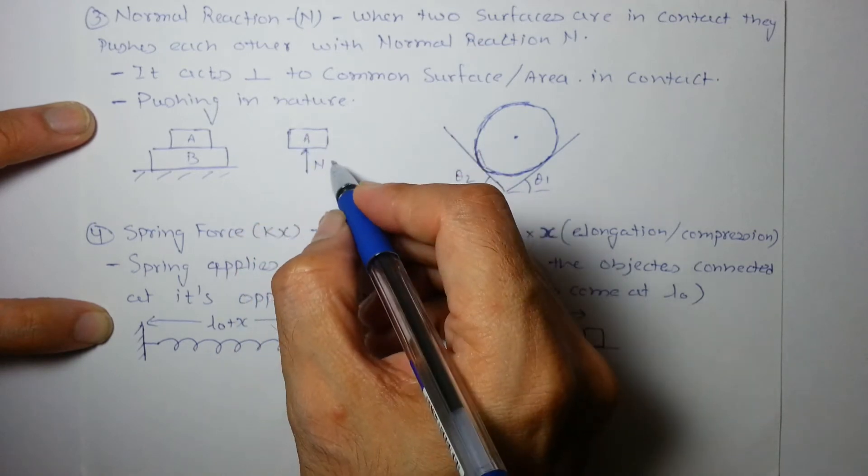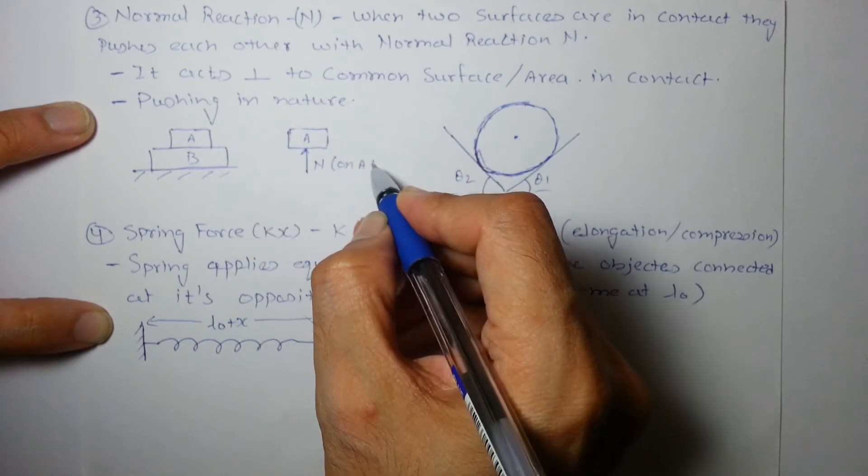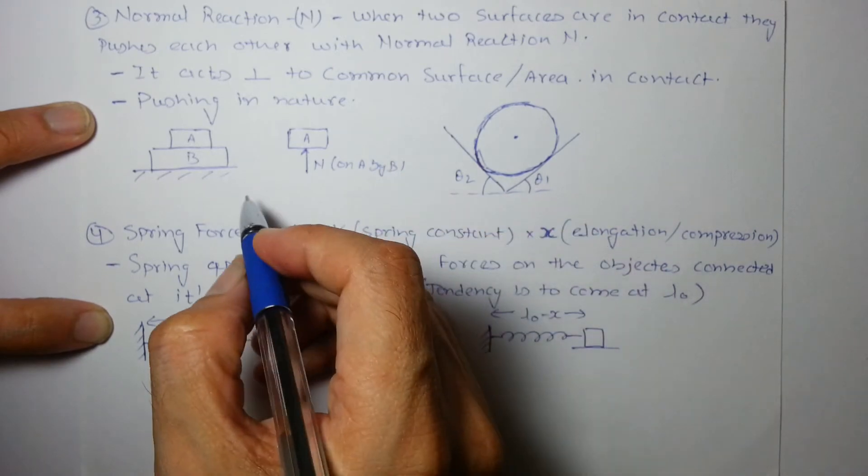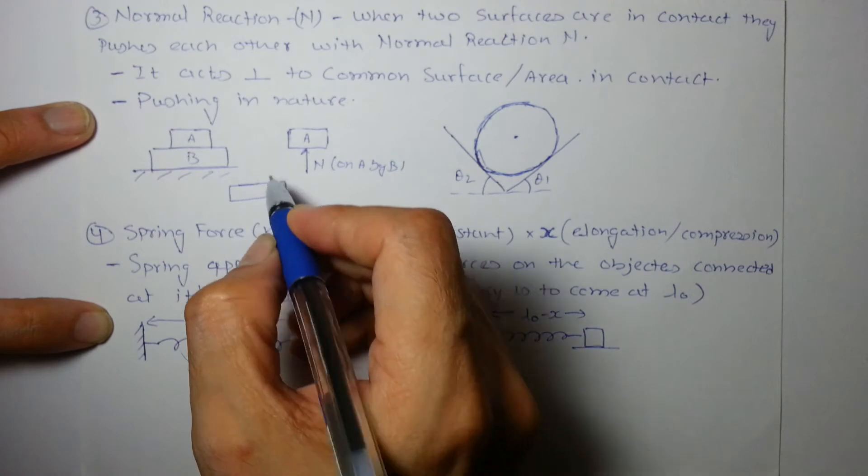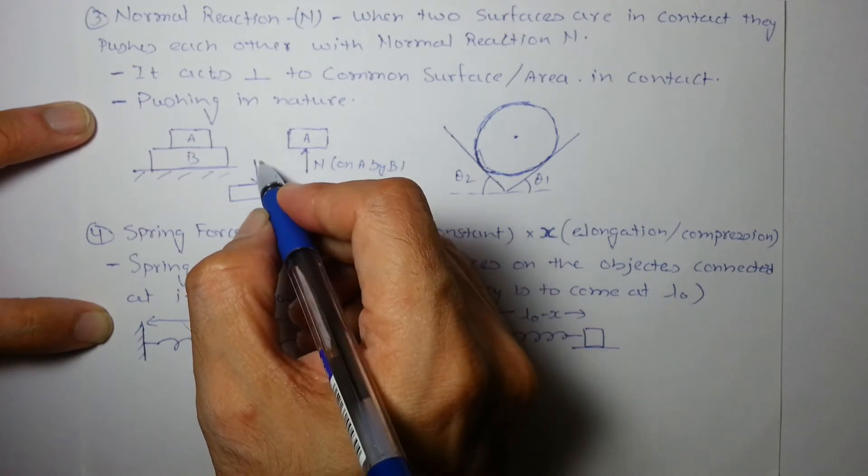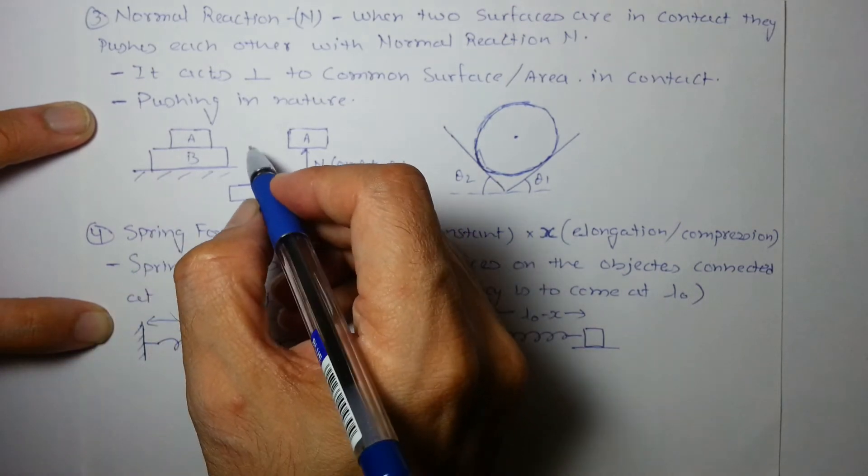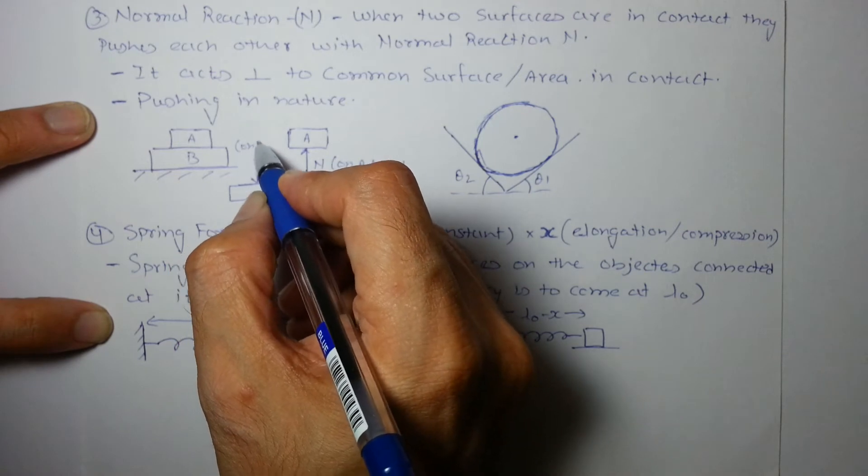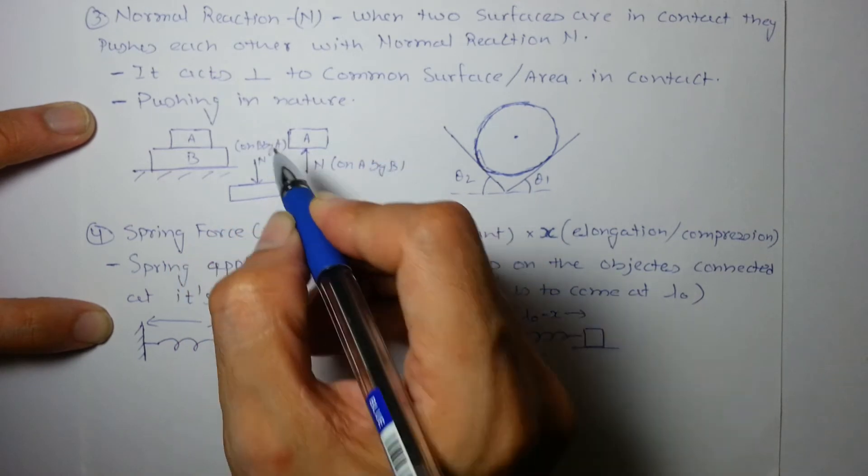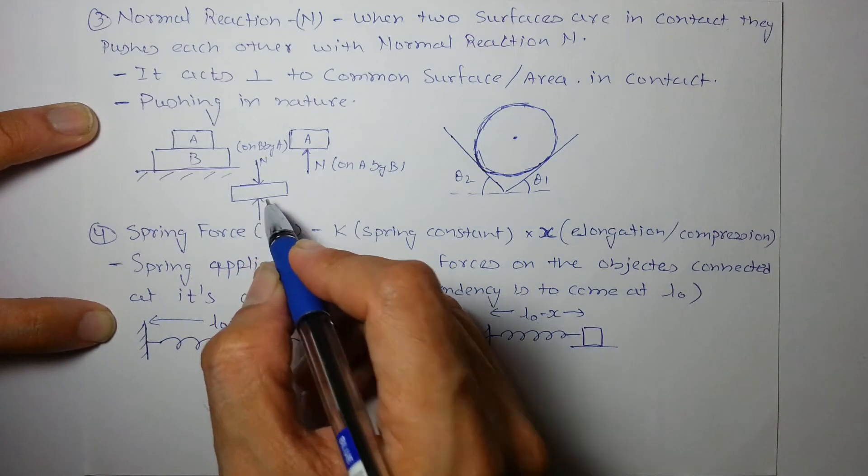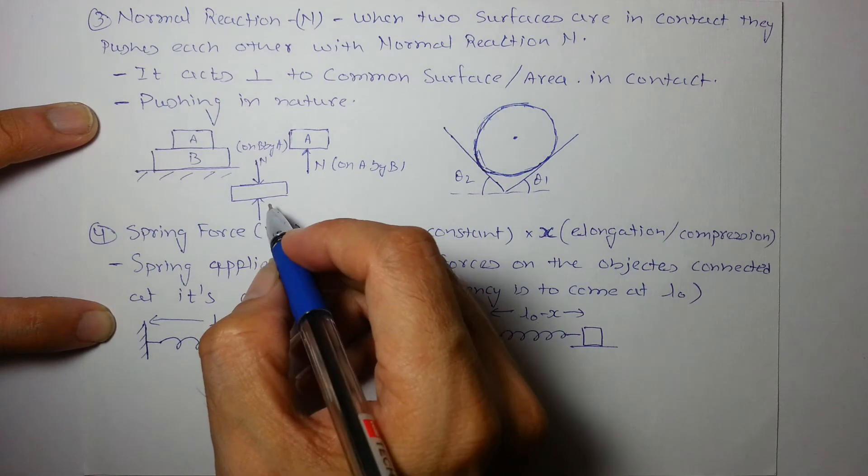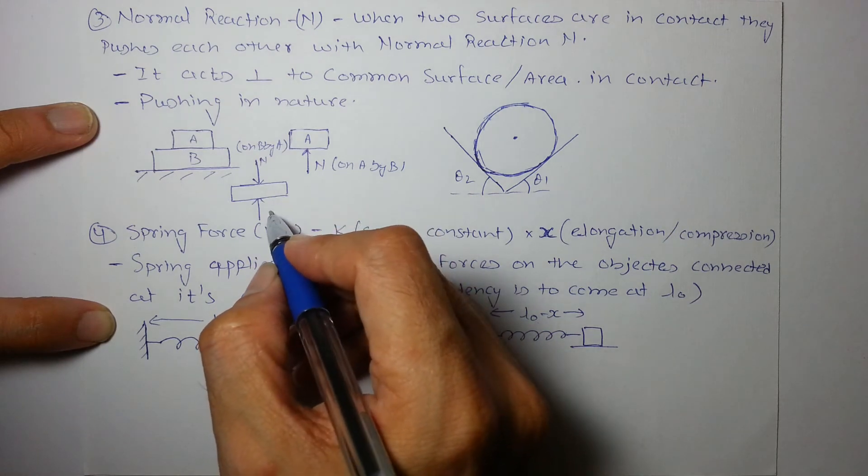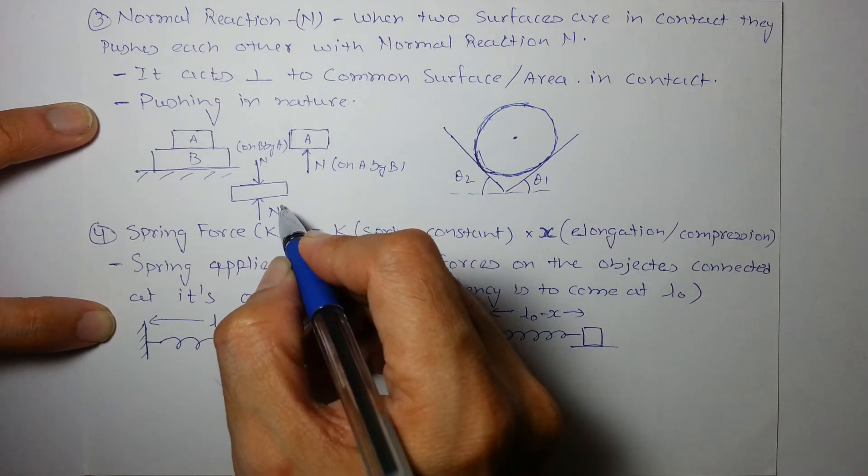This is force on A by B. So what will B experience? B will experience the same force which is on B by A, obviously. But it is also in contact with the ground, so it will experience one more normal from the ground. Again, ground will try to push it.